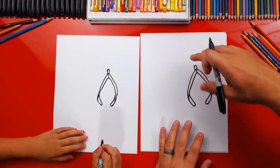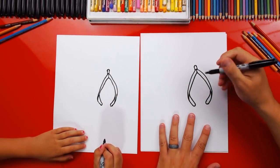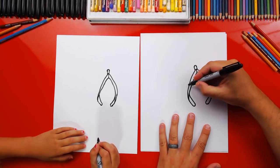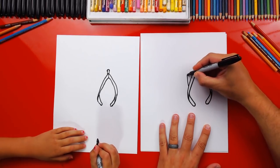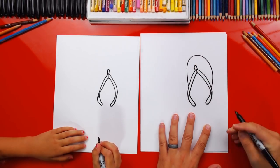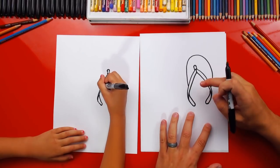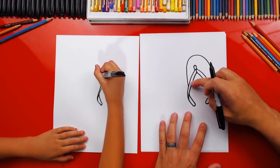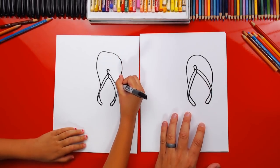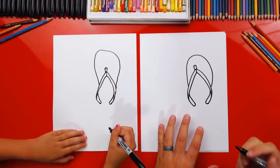Alright. Now we need to draw the flip flop part, the part you stand on. So it looks like a foot or a shoe. So we're gonna start here. We're gonna draw a curve that comes up and around and then connects to the other side. It looks like an upside down U. I kind of have it straight on the inside. You did it. You did it. It looks perfect.